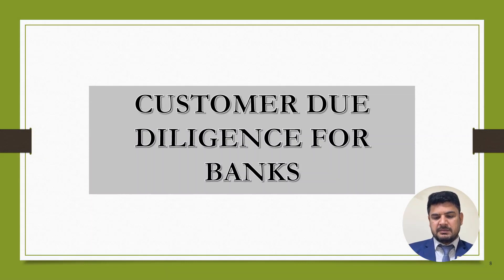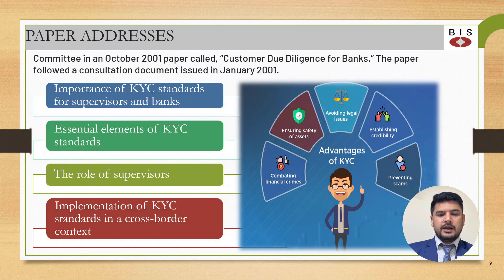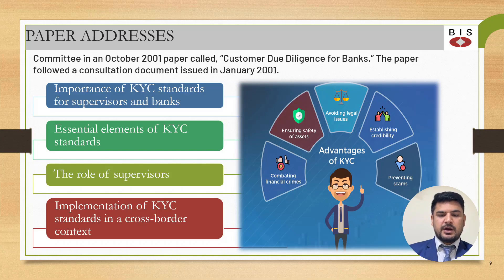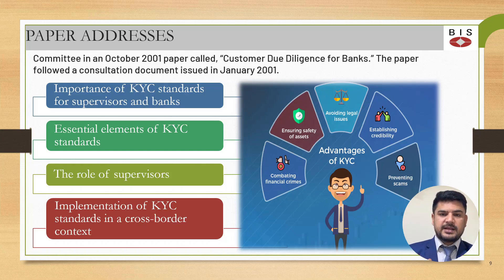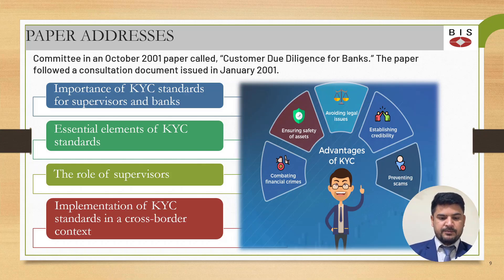Now let's look at customer due diligence for banks. In 2001, the Basel Committee introduced a paper called 'Customer Due Diligence for Banks,' following consultation documents issued in January 2001. The paper covers the importance of KYC standards for supervisors and banks in combating financial crimes, ensuring safety of assets, additional legal issues, establishing credibility, preventing scams, essential elements of KYC standards, the role of supervisors, and implementation of KYC standards in a cross-border context.